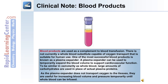Blood products are used as a complement to blood transfusion. There is not currently a whole blood substitute capable of oxygen transport that is suitable for human use. One of the most successful blood products is known as a plasma expander. To be similar in osmolarity as whole blood, large amounts of carbohydrates are used in place of the actual plasma proteins. As the plasma expander does not transport oxygen to the tissues, they are useful for increasing blood volume and pressure temporarily until whole blood can be infused into the patient.